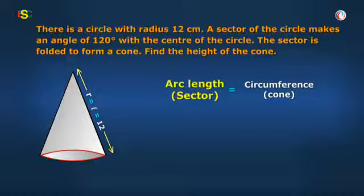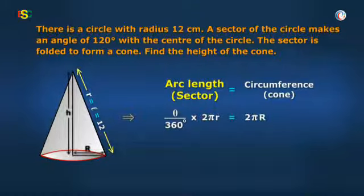Thus, arc of the sector, that is θ/360° × 2πr = 2πR, which is the circumference of the base of the cone.